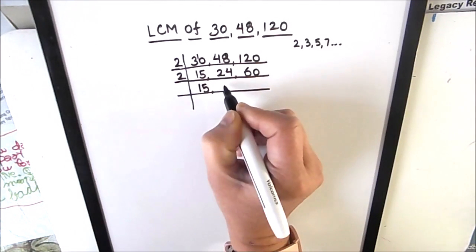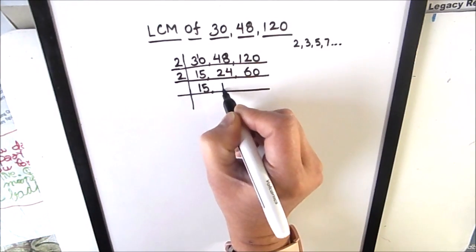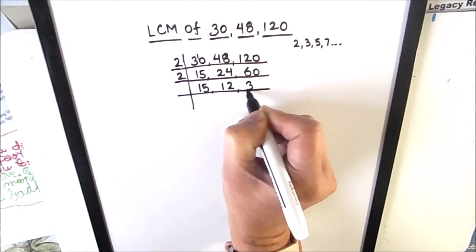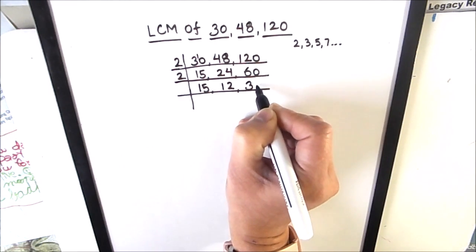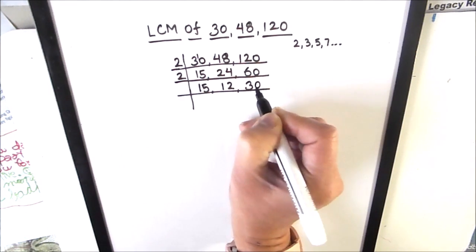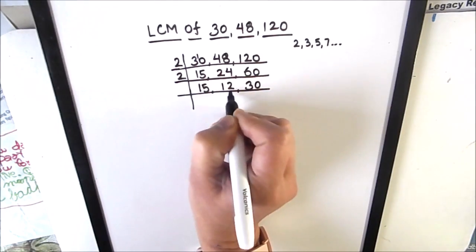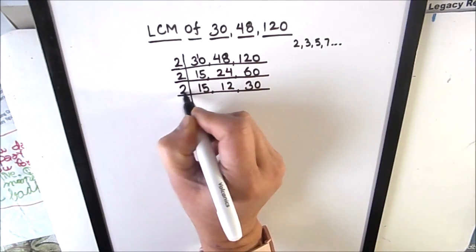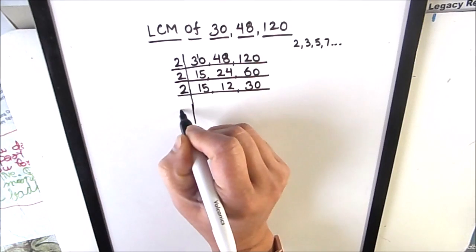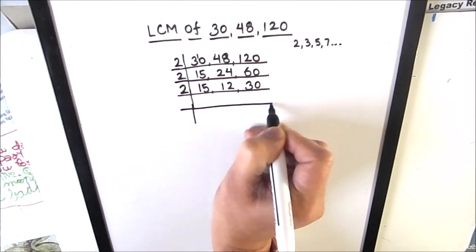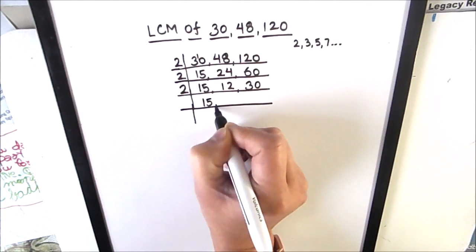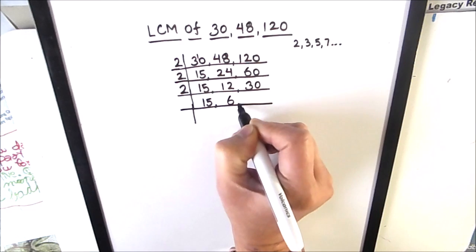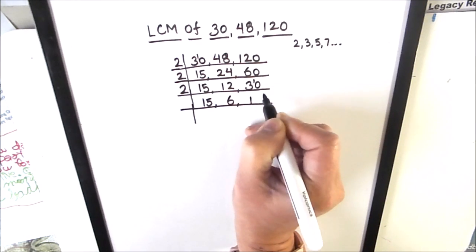Dividing 24 by 2 gives 12, and dividing 60 by 2 gives 30. Again, 12 and 30 are divisible by 2, and 15 is an odd number so we write it as is. Dividing 12 by 2 gives 6, and dividing 30 by 2 gives 15.